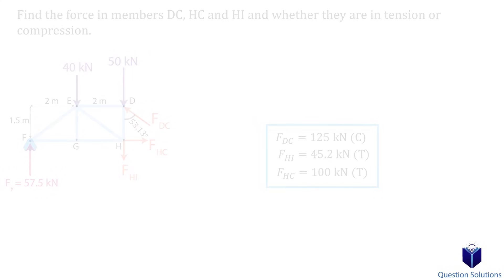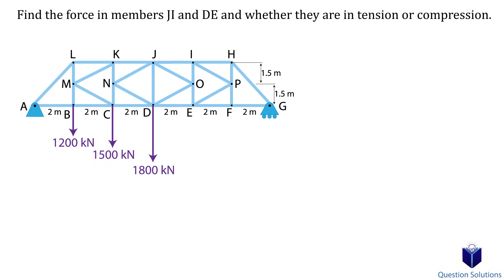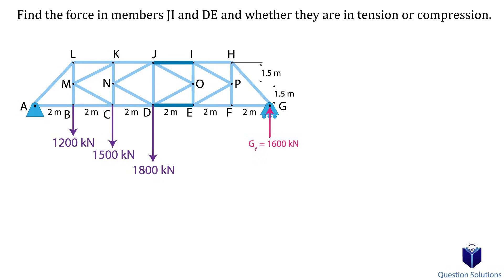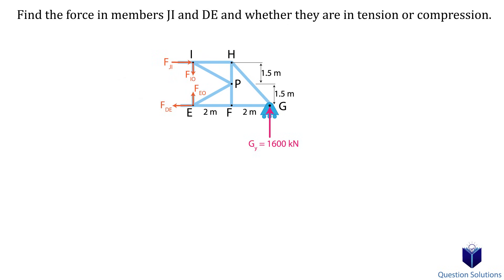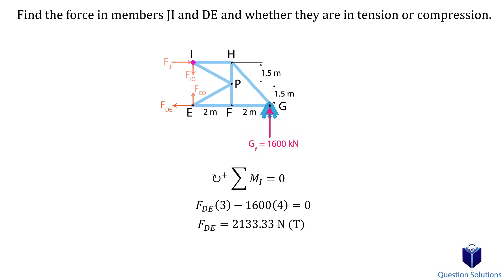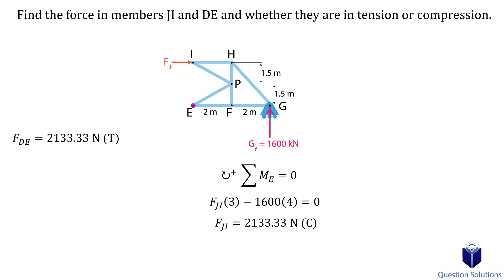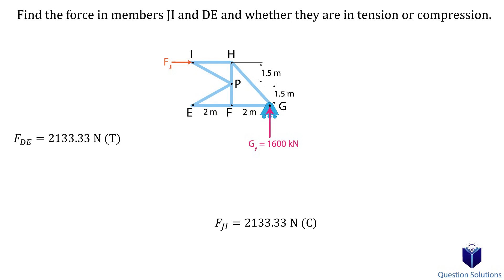In the final example, we need to find the forces in members JI and DE. Focusing on the right side, we find the vertical reaction at roller G by writing a moment equation about point A. We cut the truss and assume force directions. To solve for DE, we write a moment equation about pin I, eliminating JI, IO, and EO (whose line of action crosses pin I). Positive result — DE is in tension. For JI, a moment equation about pin E gives a positive value — JI is in compression since the force is coming towards pin I.